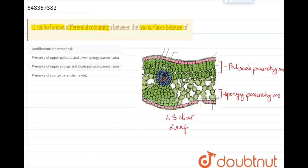Now, why is there a differential coloration? It's because the palisade parenchyma consists of very high amount of chlorophyll. And hence, you can see that it is very dark green in color.